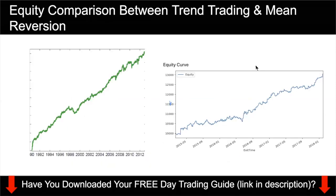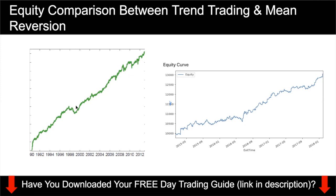Right now I have two equity curves for you. One is a trend trading equity curve and the other is a mean reversion equity curve. I'd like you to pause this video and try to make a guess as to which equity curve is the trend trading one and which is the mean reversion one. The answer is: the one on the left is actually the mean reversion equity curve, and the one on the right is the trend trading equity curve.